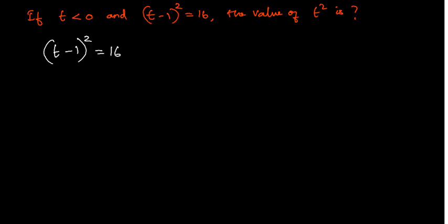If I take the exponent 2 on this side, it will become square root. So we have t-1 = √16, and we know that √16 is nothing but ±4.